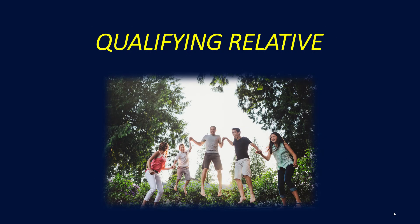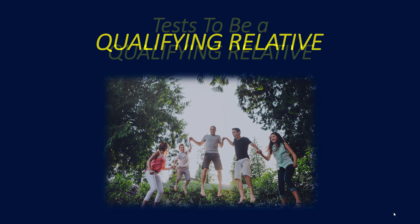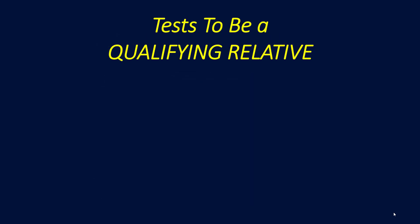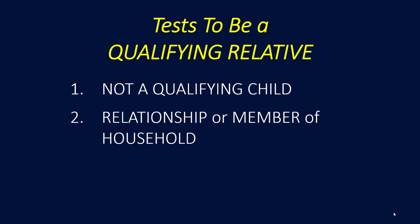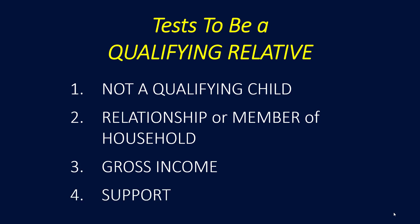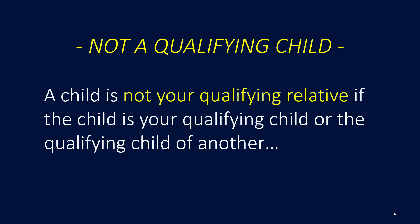Next, let's talk about qualifying relatives. There are tests to be a qualifying relative. Number one: you're not a qualifying child — that makes sense. Number two: the relationship or member of household test. A child is not your qualifying relative if the child is your qualifying child or the qualifying child of another taxpayer.